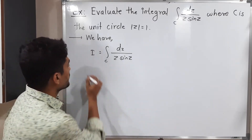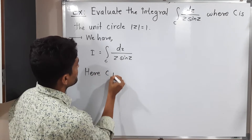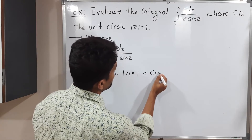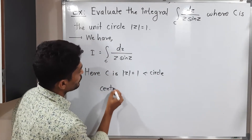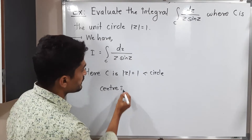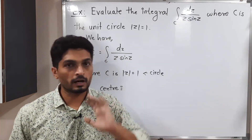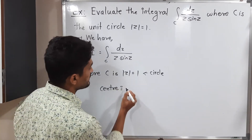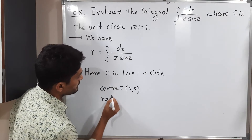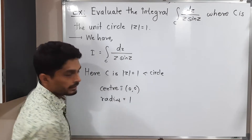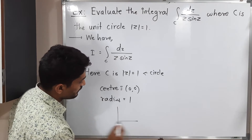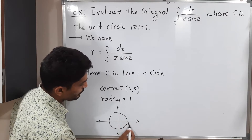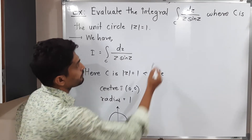Here, C is |z| = 1, which is a circle. The standard equation of a circle is |z - z₀| = R, where z₀ is the center. Here, nothing is subtracted, so z₀ = 0. The center is (0, 0) and the radius is 1. Let me draw the circle: this is the real axis, this is the imaginary axis, and we have a circle with center (0, 0) and radius 1.